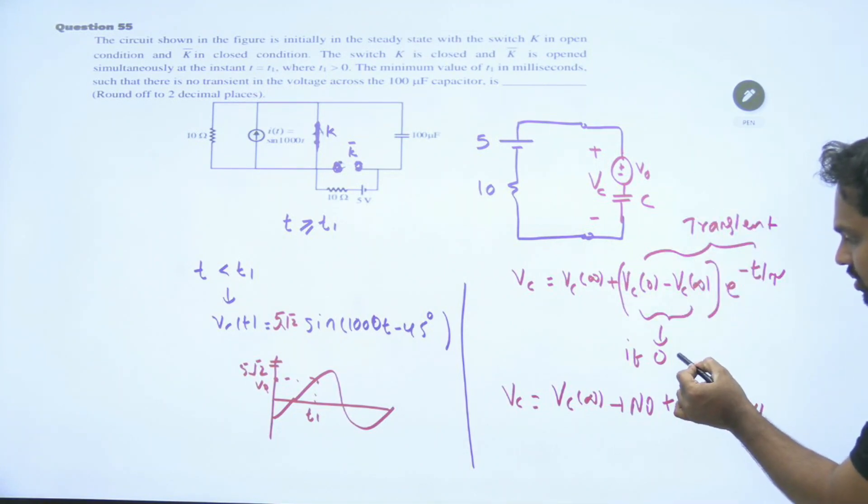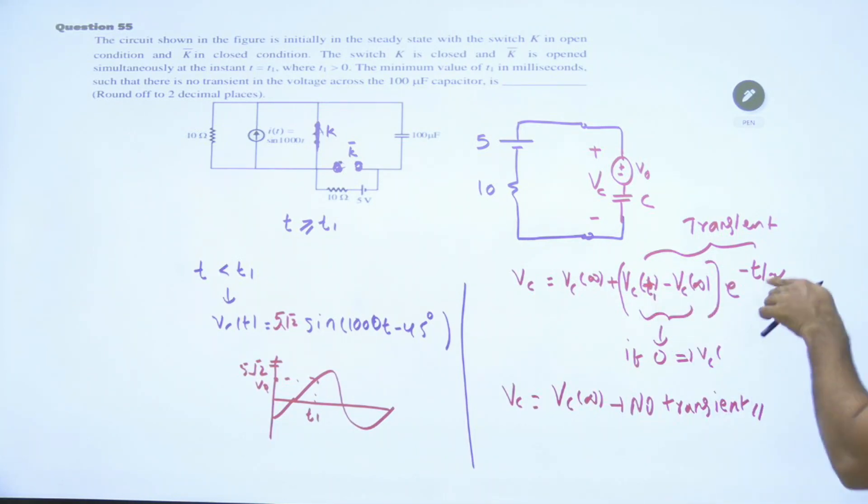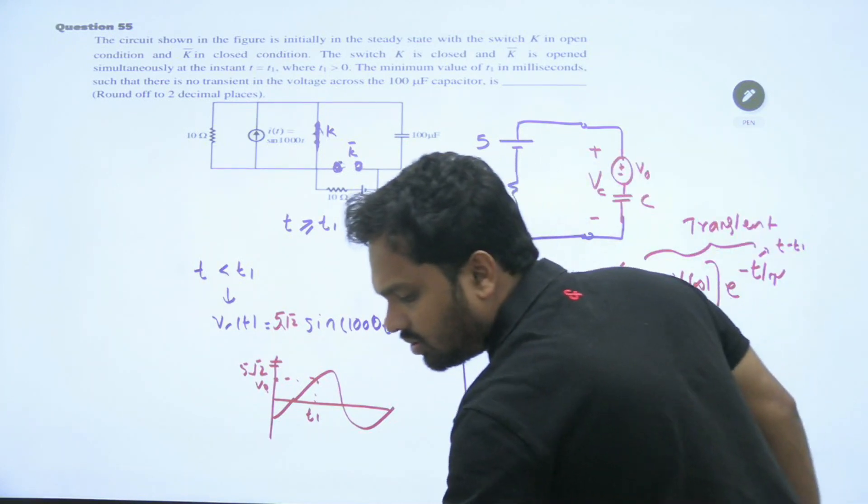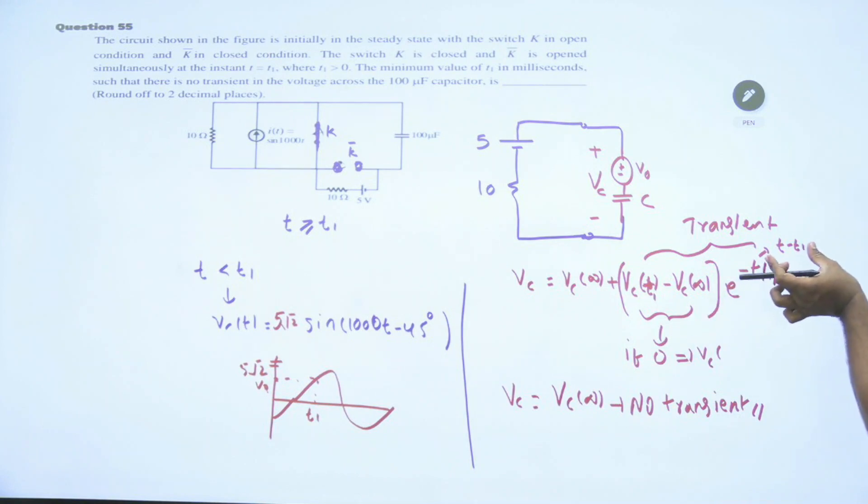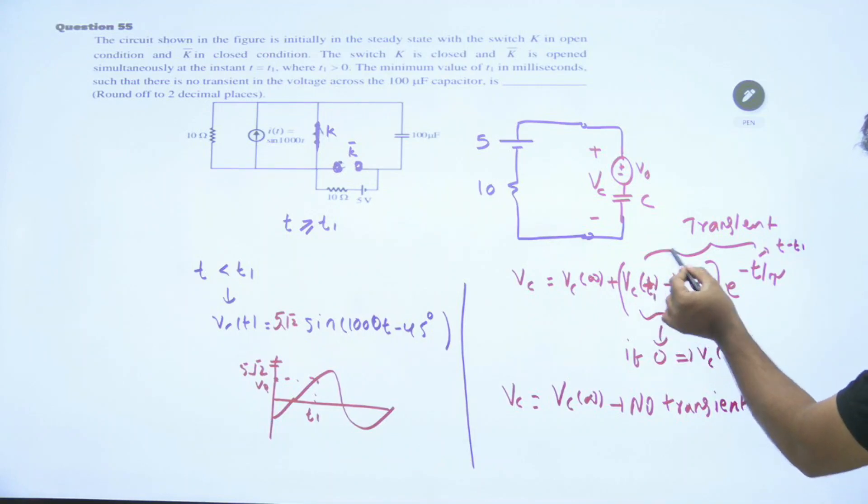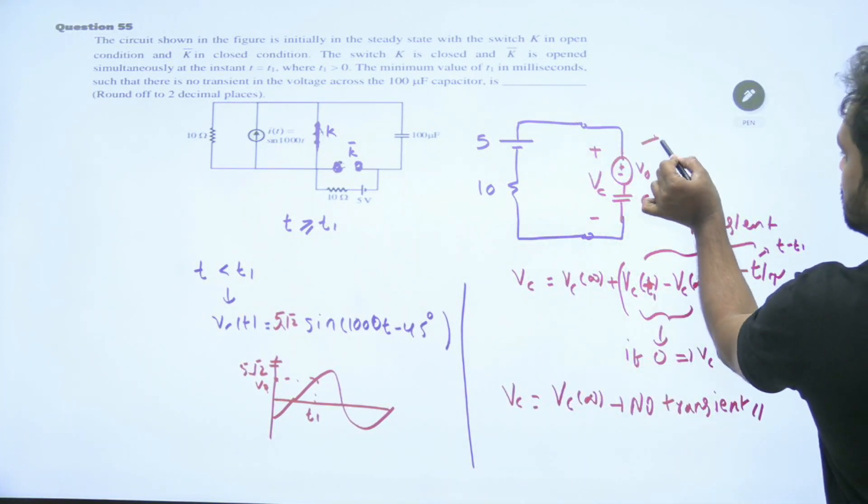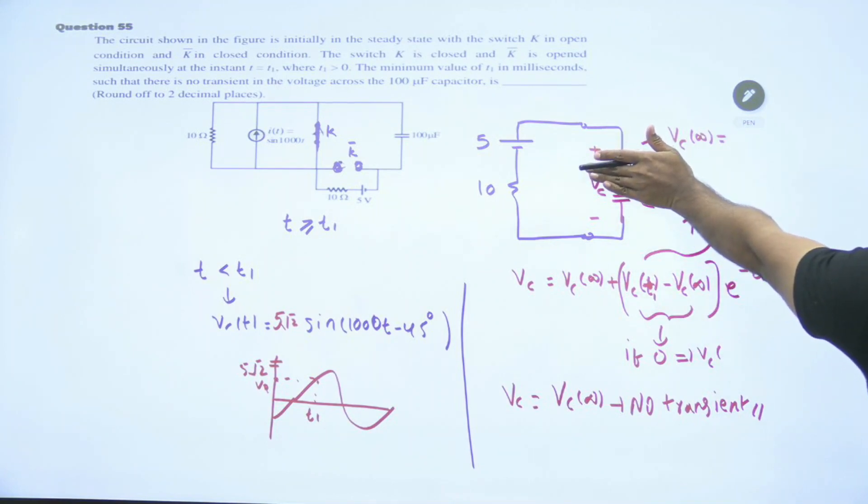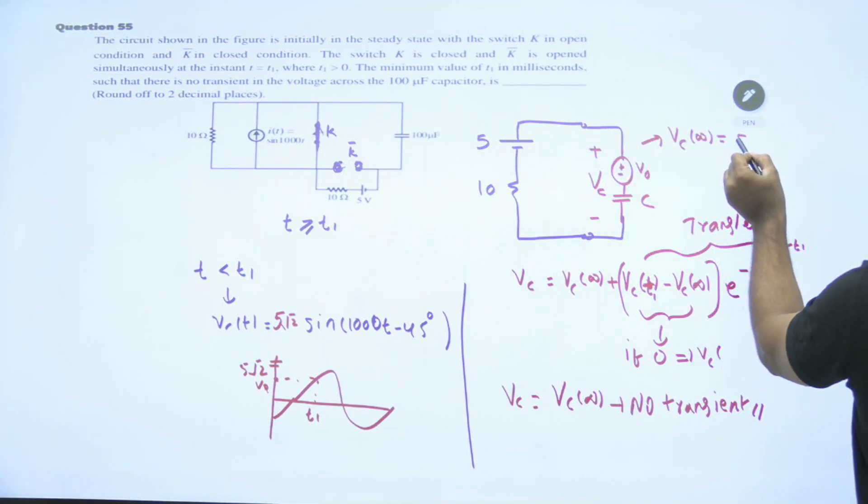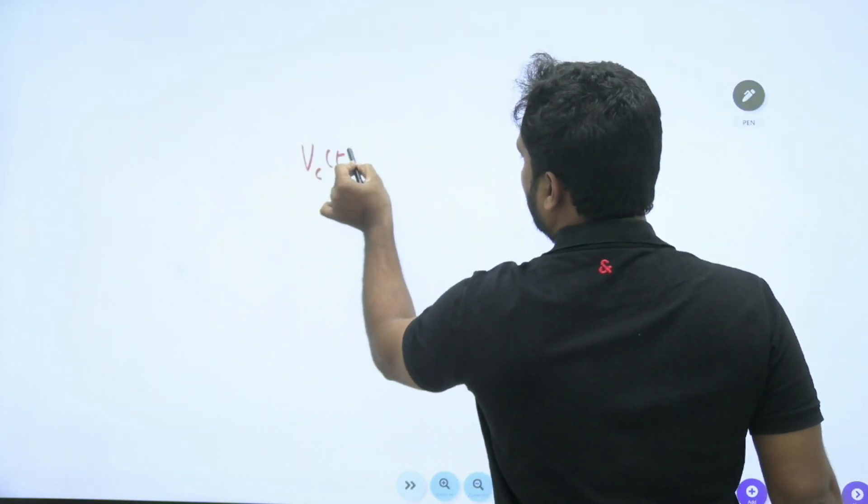That is my response. VC must be equal to VC of infinity directly. Then this part must be 0. How to make this part 0? That is VC of 0, here actually we should write t1 because you have operated the switch at t1. Here also t minus t1 because it is not much important. Actually you should write this as t minus t1. Listen here, so this is t minus t1. That we need not worry about it because this part is 0. So VC equal to VC of infinity, no transient. Right? This part 0. So what is the required condition here? Your VC at time t equal to t1 must be equal to VC of infinity. What is VC of infinity here? If you replace this with an open circuit, what is the voltage you will be getting in the steady state is 5 volts.